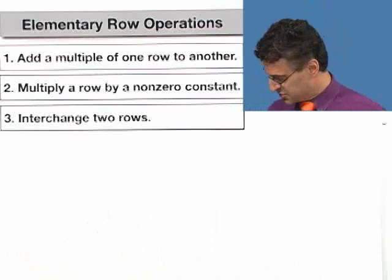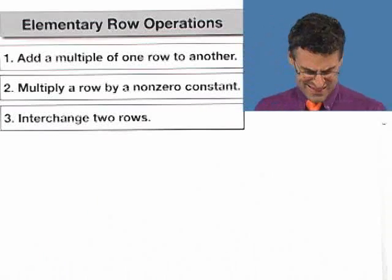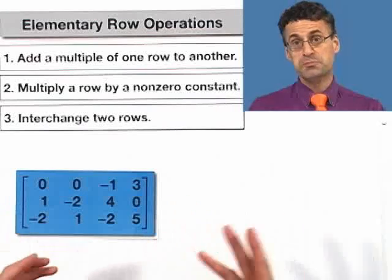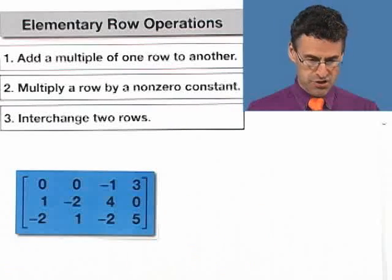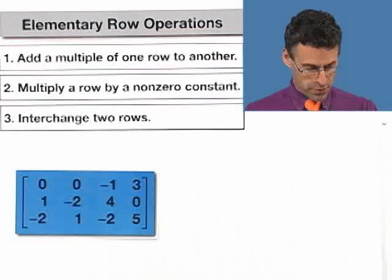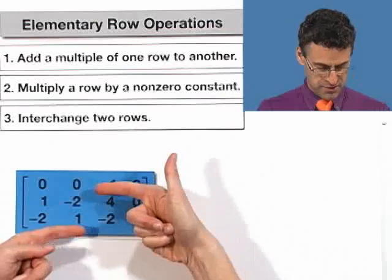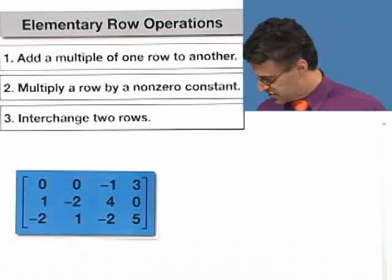So let me just illustrate these with a couple of quick examples. These are just kind of random examples here. So here's a matrix, a 3 by 4 matrix, and let's suppose that we just want to interchange the first and the third row. That means take this entire row here and reverse it, flip it with this row right here.